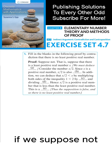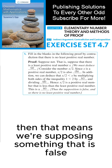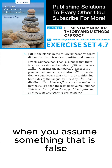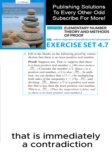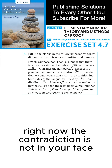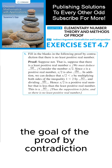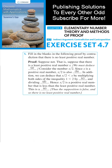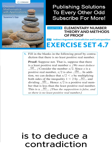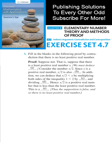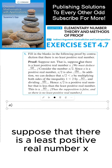In this proof, if we suppose not, then that means we're supposing something that is false. When you assume something that is false, that is immediately a contradiction. Right now the contradiction is not in your face like it will be at the end of this proof. The goal of the proof by contradiction is to deduce a contradiction, and that's actually the answer to the first question.